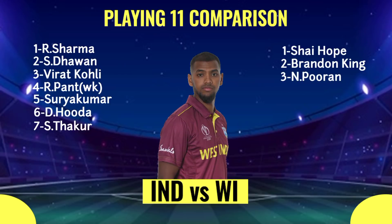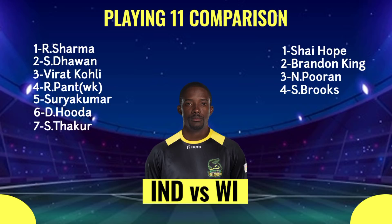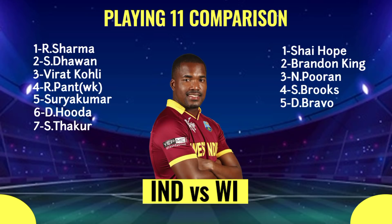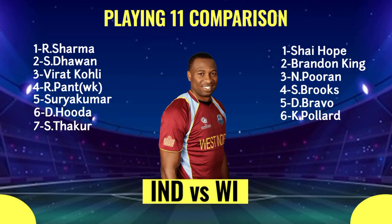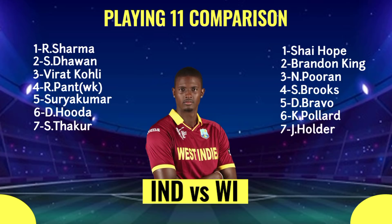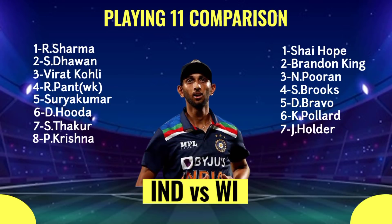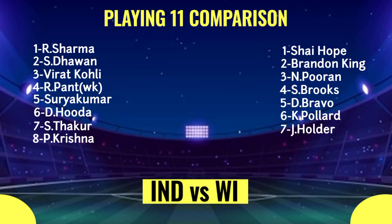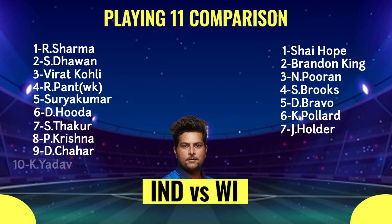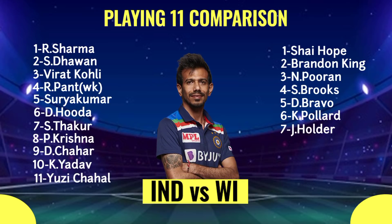West Indies Team Middle Order: Number 3 Nicholas Puran, Left-Hand Batsman. Number 4 Shammar Brooks, Right-Hand Batsman. Number 5 Darren Bravo, Left-Hand Batsman. Number 6 Kyron Pollard, All-Rounder. Number 7 Jason Holder, All-Rounder. Indian Team Bowlers: Number 8 Prasad Krishna, Right-Arm Fast Bowler. Number 9 Deepak Chahar, Right-Arm Fast Bowler.